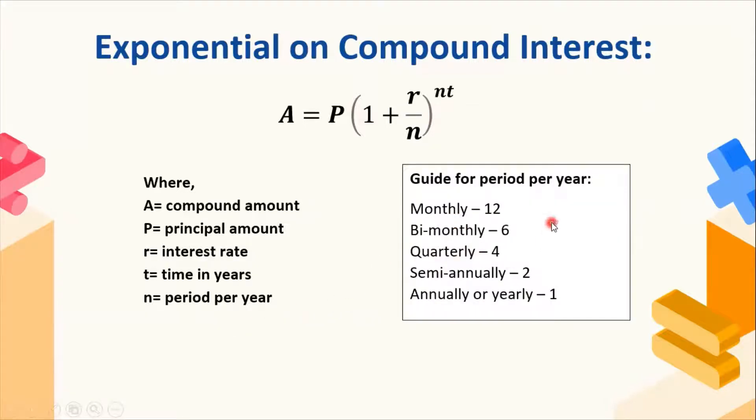Here's our guide for period per year. If interest is compounded monthly, n equals 12. If it is bimonthly, n equals 6. If it is quarterly, that is n equals 4. If it is semiannually, that is n equals 2. And if it is annually or yearly, that equals 1, regardless of the number of years involved.